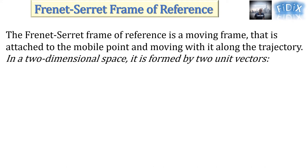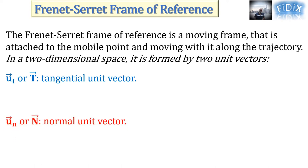In a two-dimensional space, it is formed by two unit vectors: U_T or T, the tangential unit vector, and U_N or N, the normal unit vector.